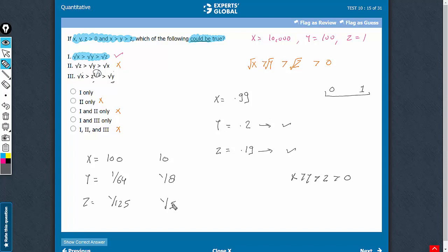And therefore, when arranged in order, we get this expression. Square root x is the biggest, 10, then cube root of z, 1 by 5, and then square root of y, 1 by 8.